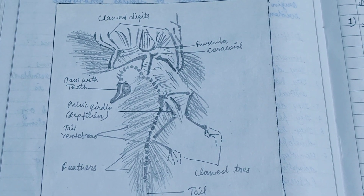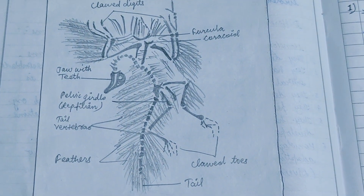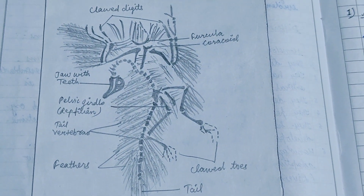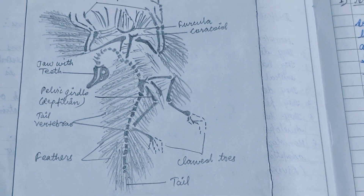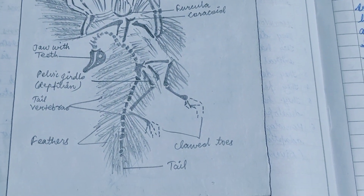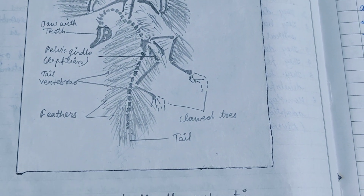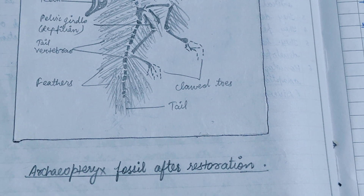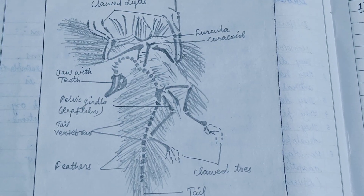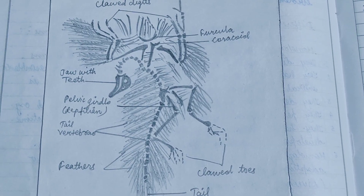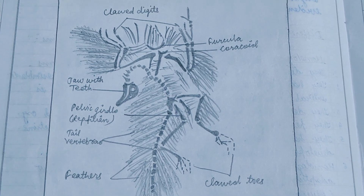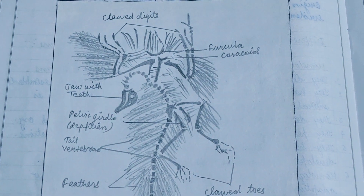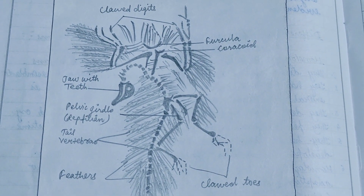The Archaeopteryx fossil after restoration is shown in the diagram. In the next video we will discuss the fossil of the trilobites. That is all about the Archaeopteryx fossil. Thank you and keep watching.